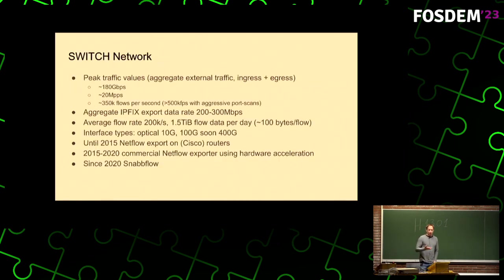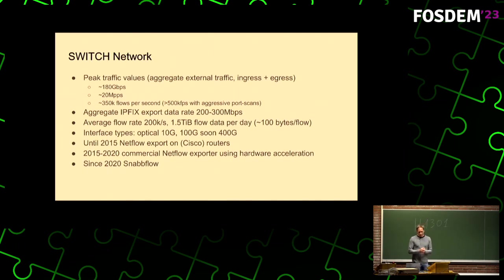Just to give an idea of the type of traffic we're dealing with: Switzerland is a small country and we are a small network. We only do NetFlow on our borders — the traffic we exchange with neighboring networks. Peak values these days are roughly 180 gigabits per second, about 20 million packets per second, and roughly 300,000 to 350,000 flows per second, unsampled.